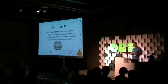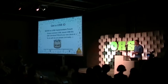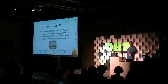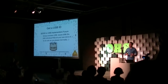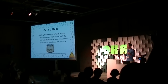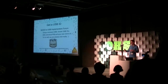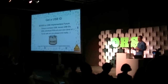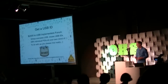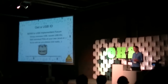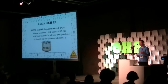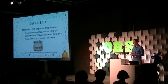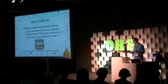USB IDs are handed out by an organization called the USB Implementers Forum. It's a consortium of big technology companies like Intel that got together to form USB standards, and also make rules about how we issue USB IDs and rules for the use of the USB logo. For $2,000, you can get yourself a USB vendor ID, and it has 65,000 unique product IDs for whatever you want to build.